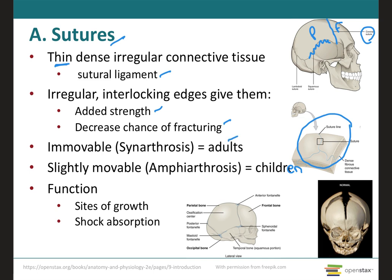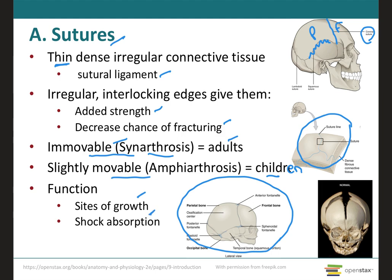In older individuals, sutures are immovable and therefore a synarthrosis type of joint. But in infants and children, they are slightly movable. We can summarize that sutures play an important role as sites of growth during development and also as shock absorption in the skull.